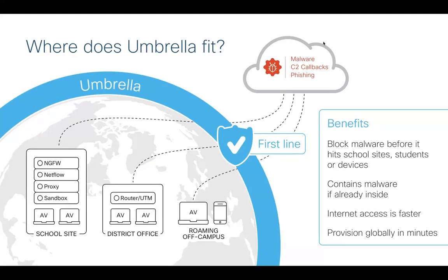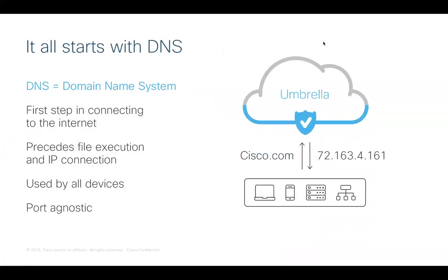So how does Umbrella actually work? With Umbrella, it all begins with DNS. We use DNS as the main mechanism to get traffic to our cloud platform for inspection. DNS is the domain name system, and it's used to map domain names like cisco.com to an IP address. Think about when you want to call a friend — you look up their name in your contact list instead of remembering their phone number. DNS was developed for a very similar reason, so you wouldn't need to remember the IP address for every website. DNS is the first step in nearly all internet connections and used by all devices, so with Umbrella, we're tying into something you're already doing today.